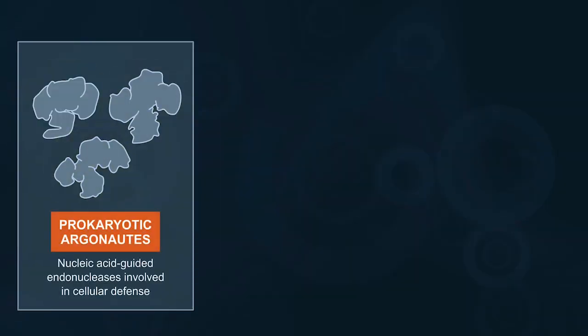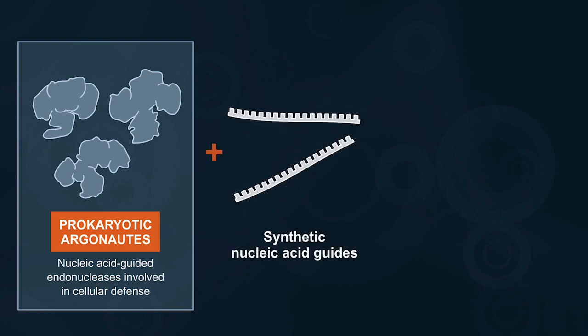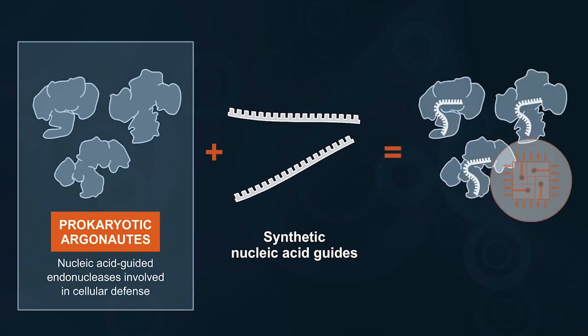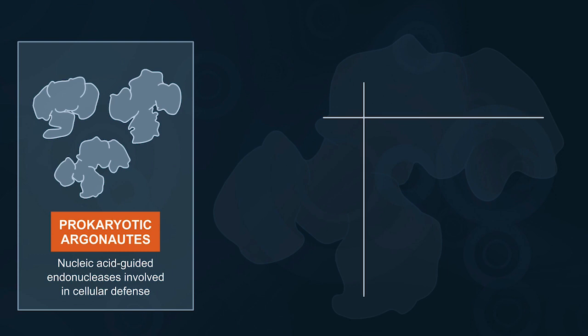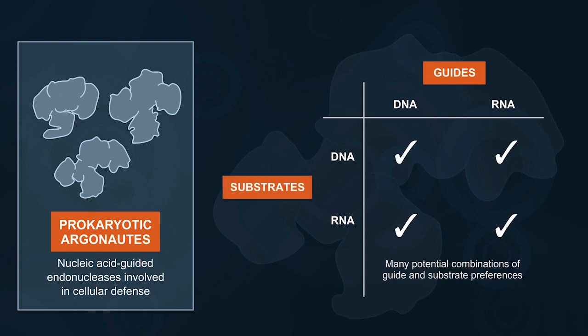Prokaryotic Argonauts are nucleic acid-guided endonucleases involved in prokaryotic cellular defense against foreign genetic elements. When provided with synthetic nucleic acid guides, prokaryotic Argonauts can be used as programmable nucleases. Argonauts from different prokaryotic species may utilize either DNA or RNA guides to target DNA or RNA substrates, leading to many potential combinations of guide and substrate preferences.